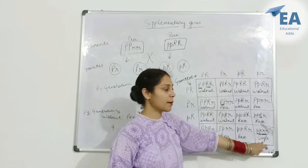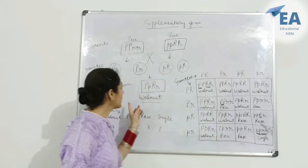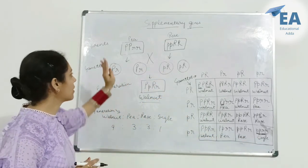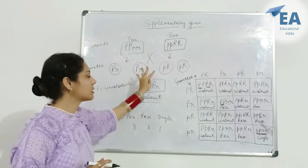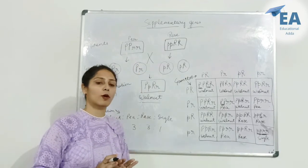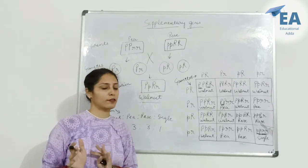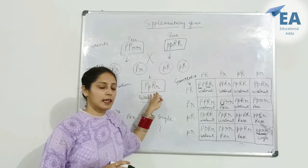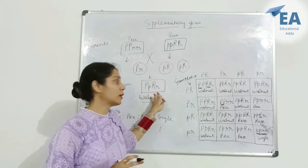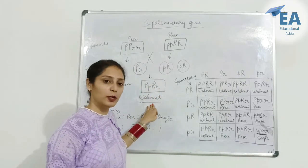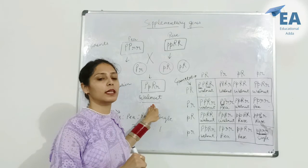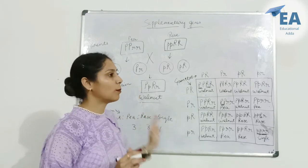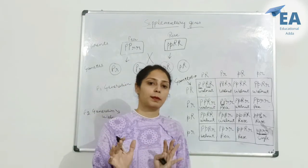You can clearly see what supplementary genes are: if they are different in dominant form, they will show you different effects. But if they come together in dominant form, they will produce a new trait. This was all about our complementary and supplementary genes.